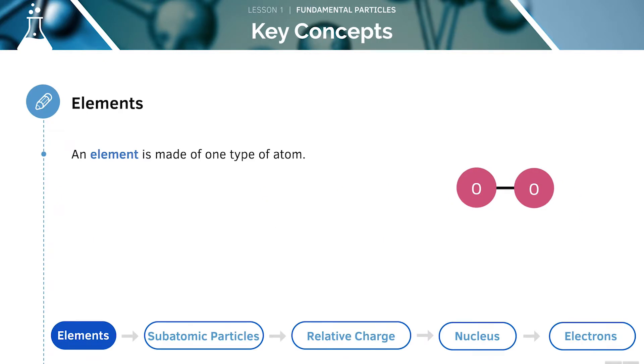Elements are made up of atoms and each element is made up of one type of atom in particular. As we can see here, the element oxygen is made up only of oxygen atoms.